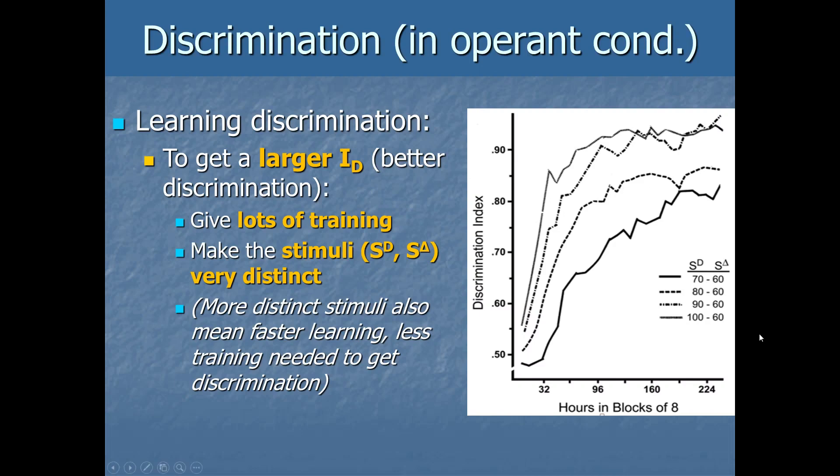Now look at the dashed line, right? The next one up, this dashed line here, in that case, the SD was 80 hertz, whereas the S delta was 60 hertz again. So they're a little more distinct now. And sure enough, the discrimination index gets higher overall. But not only that, it goes up faster, right? It takes fewer hours of practicing this for them to learn and figure out which one they should respond to. They learn faster and they learn better by the end.